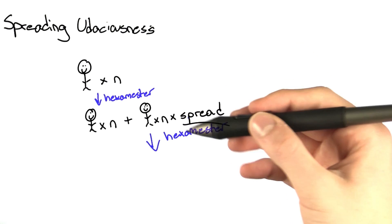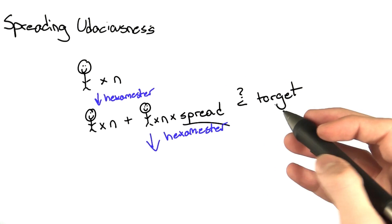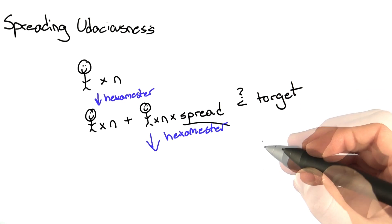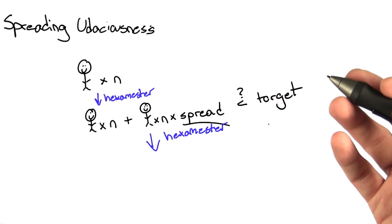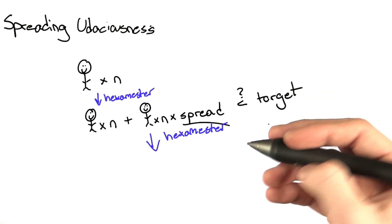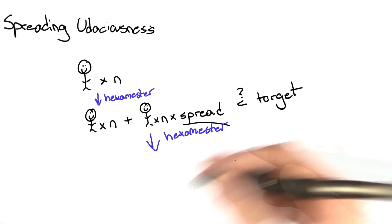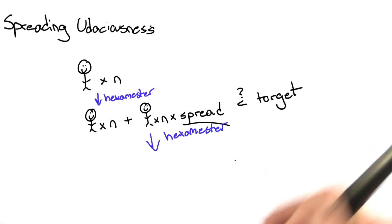This process continues as long as the number of Udacians is less than the target. With a little bit of math, you can solve this pretty straightforwardly, and you might have done it in middle school or high school. But we're going to use recursion to solve this problem very easily.